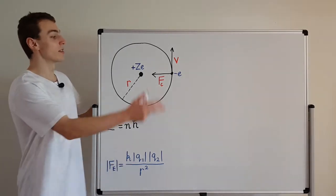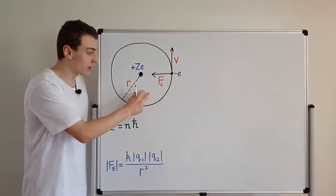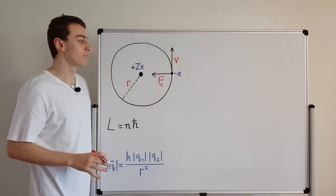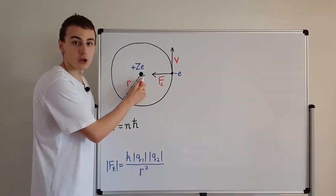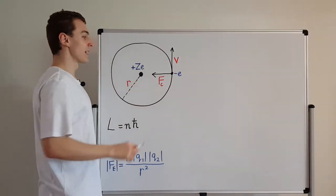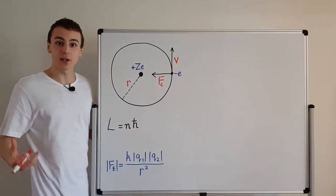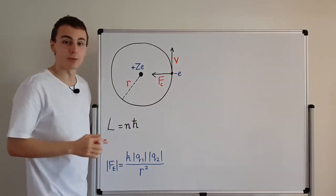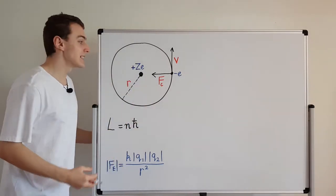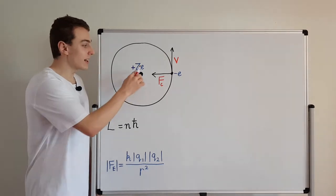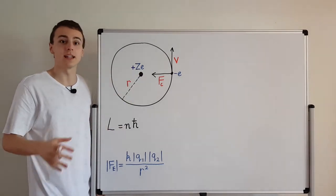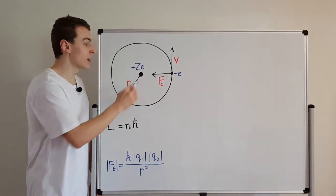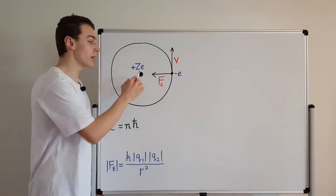Now let's use this diagram to derive an expression for the radius. From the diagram we have the charge of the nucleus, which is plus ZE. E is the charge of an electron and the plus sign is because these are protons. Z is the atomic number — it tells us how many protons are in the nucleus. Hydrogen has Z equals 1, helium Z equals 2, lithium Z equals 3, and so on.